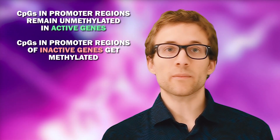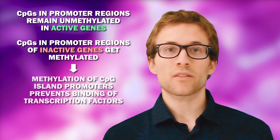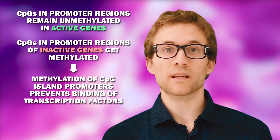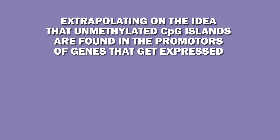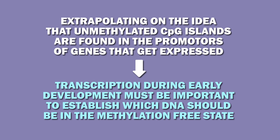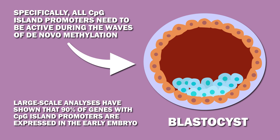CpGs in promoter regions tend to remain unmethylated if the genes are expressed, but CpGs in promoter regions of inactive genes get methylated. The methylation of CpG island promoters prevents binding of transcription factors and results in gene silencing. Extrapolating on this idea, transcription during early development must be important to establish which DNA should be in the methylation-free state. All CpG island promoters need to be active during the waves of de novo methylation that occur at the blastocyst stage, and large-scale analyses have shown that 90% of genes with CpG island promoters are expressed in the early embryo.